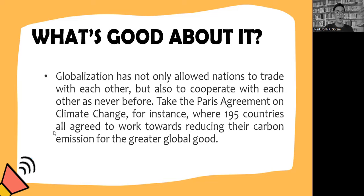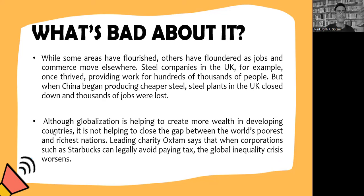While some areas have flourished, others have floundered as jobs and commerce move elsewhere. For example, steel companies in the UK were once providing work for hundreds of thousands of people, but when China began producing cheaper steel, steel plants in the UK closed down and thousands of jobs were lost. Although globalization is helping to create more wealth in developing countries, it is not helping to close the gap between the world's poorest and richest nations. Charity Oxfam says that when corporations such as Starbucks can legally avoid paying tax, the global inequality crisis worsens.